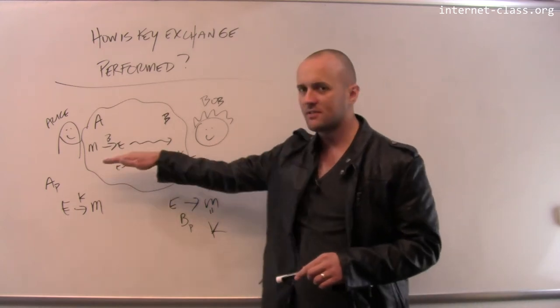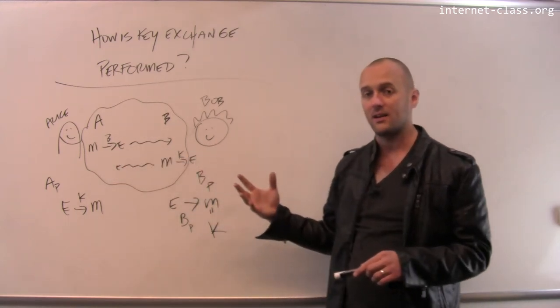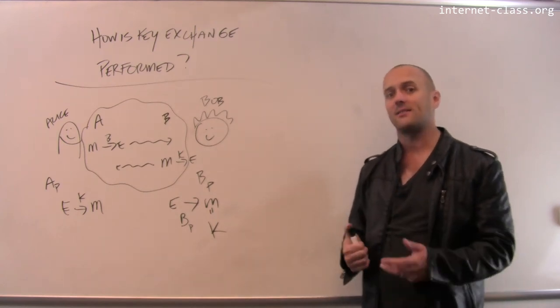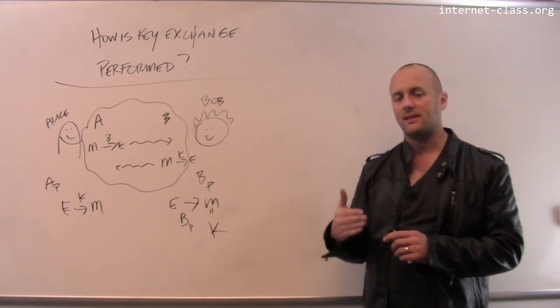And then from that point on, any messages that go back and forth, either from Alice to Bob or from Bob to Alice, are then encrypted using that symmetric key.